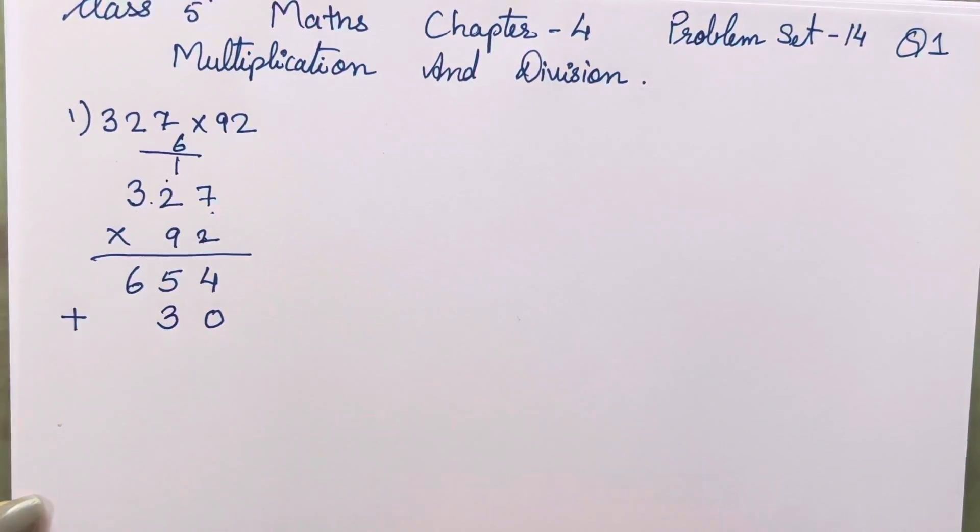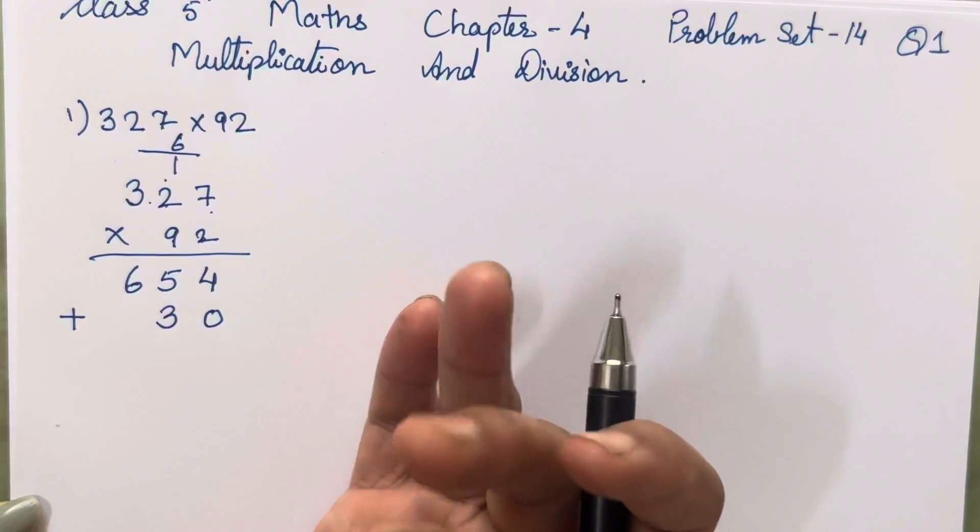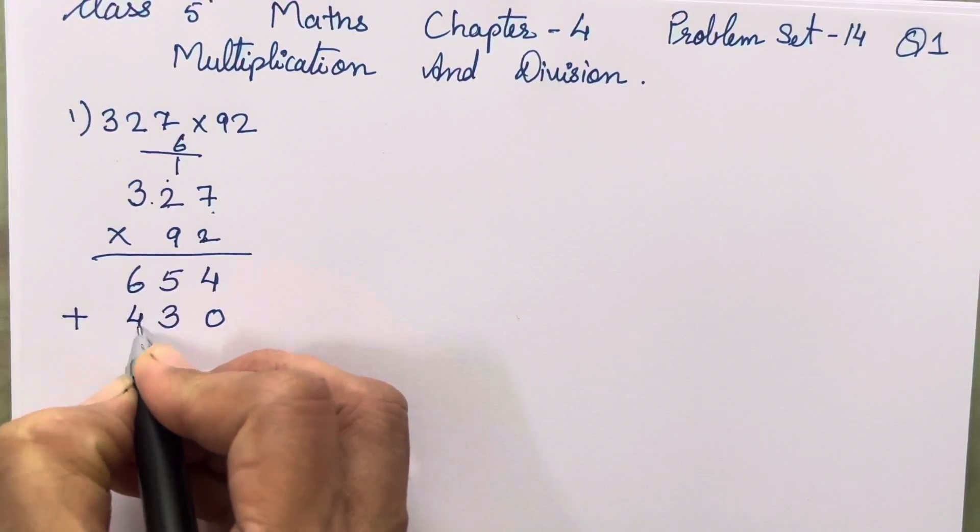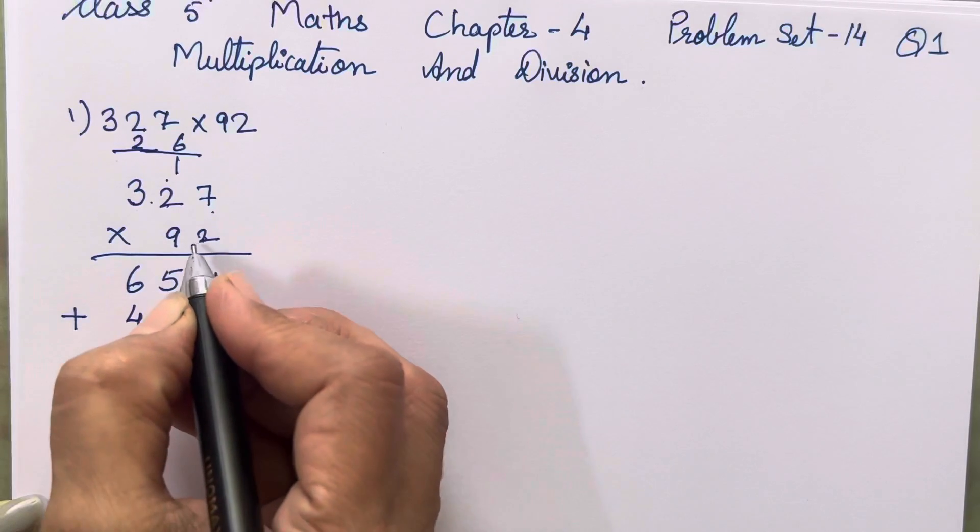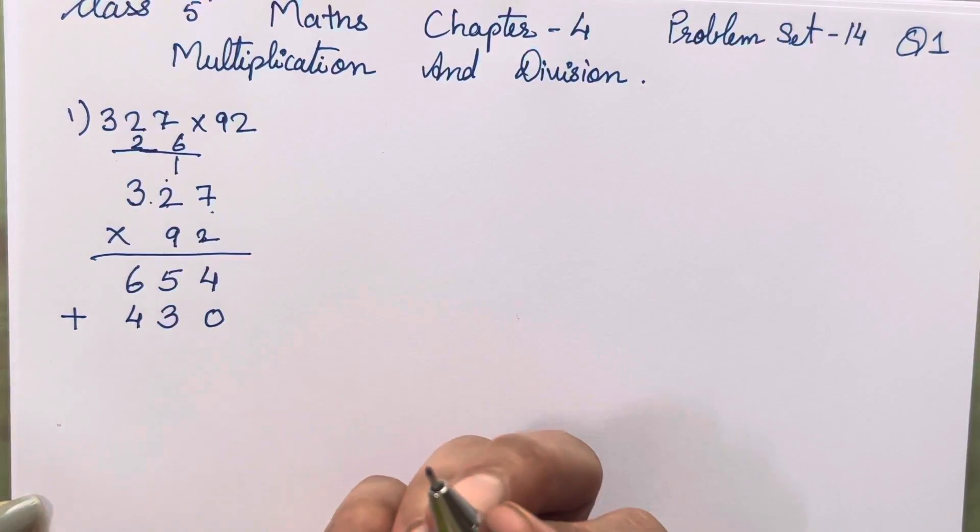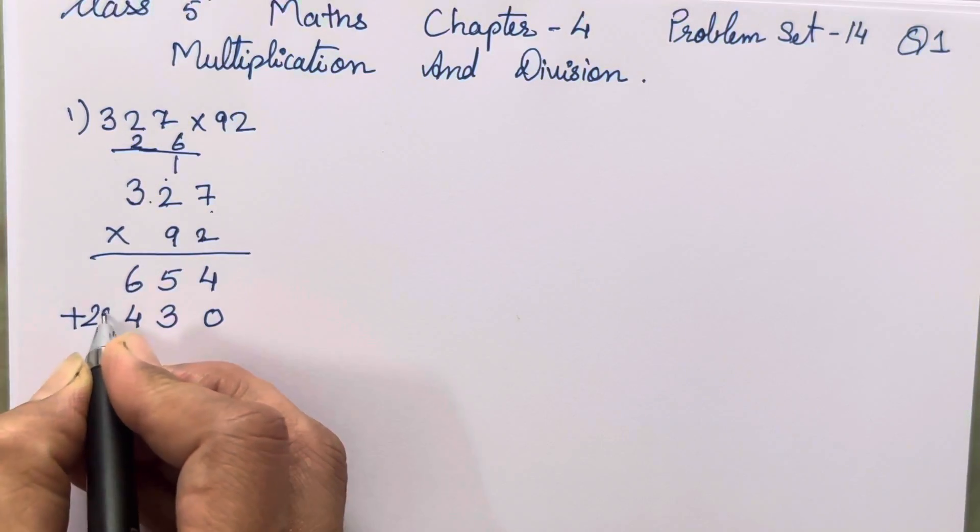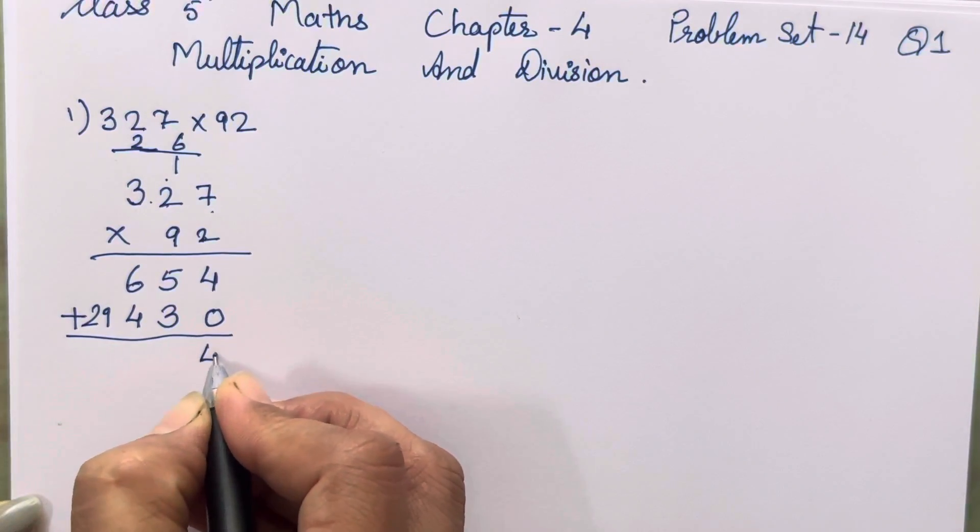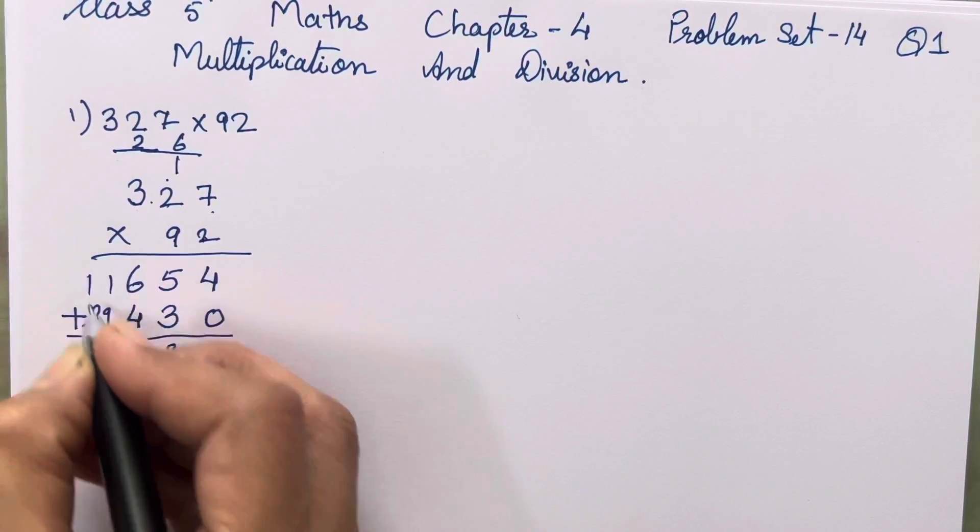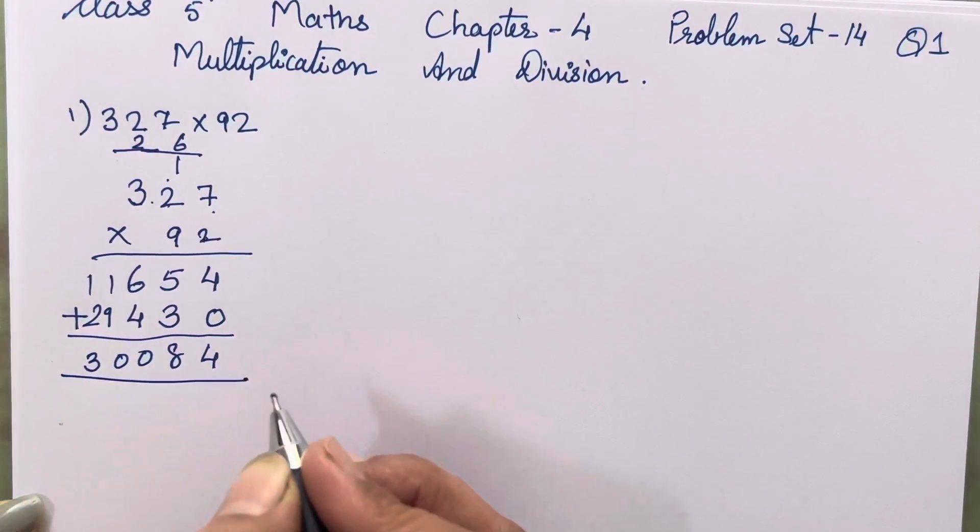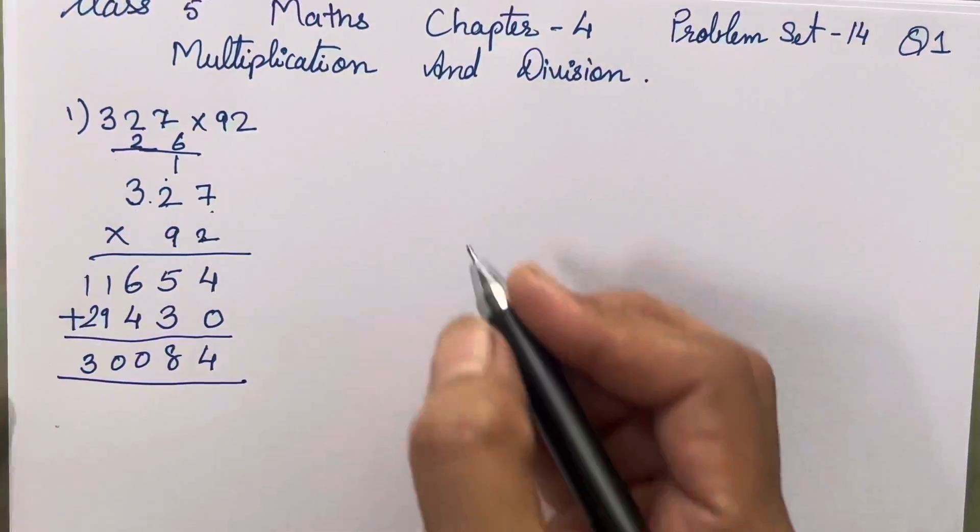For the second digit, we have to first take 0. Then 9 sevens are 63, 9 twos are 18, 19, 20, 21, 22, 23, 24. So 4 over here, 2 will be carried forward to the next number. Then 9 threes are 27 plus 2, 29. So your final answer after addition will be 30,084.